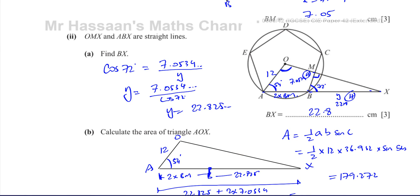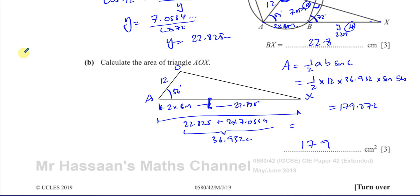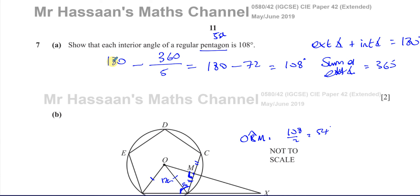That is the answer to this question. In summary: I found AX by adding BX to twice BM; OA is the radius 12; the angle is 54 degrees, half the interior angle of 108. Using ½ab sin C gives the area. That concludes question number 7, which was requested by one of the students. Other questions from this paper, and playlists for polygons, trigonometry, and sine and cosine rules are linked — this question covers a mixture of all those topics. Thank you for watching, see you soon.